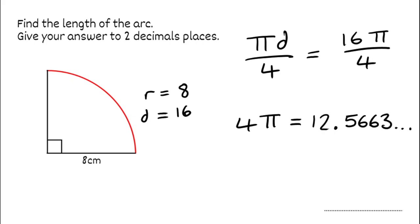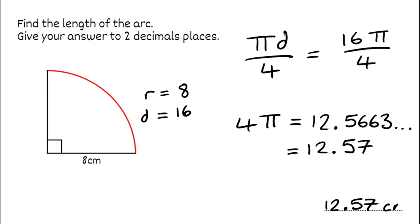That's enough to round. So to two decimal places, 12.5 — and the 6 rounds up to a 7 — giving us 12.57. Using the correct units, because our radius was in centimetres, our arc length would also be in centimetres: 12.57 centimetres.